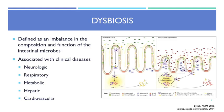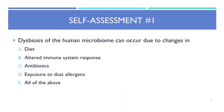First question: dysbiosis of the human microbiome can occur due to changes in what — the diet, altered immune system, antibiotics, exposure to dust allergens, or all of the above? The answer is all of the above — everything can have a big impact.